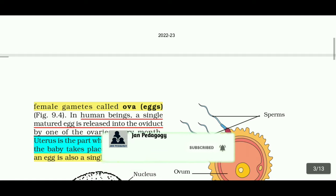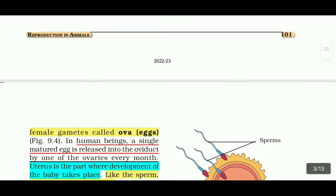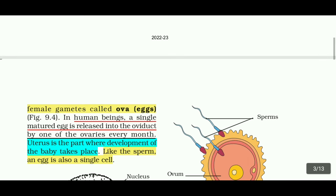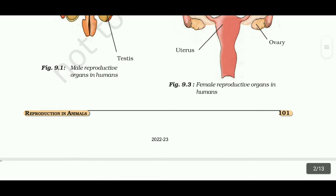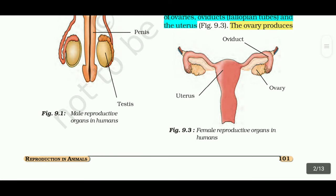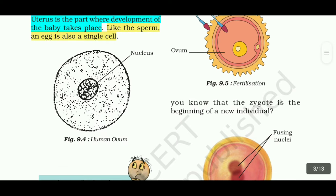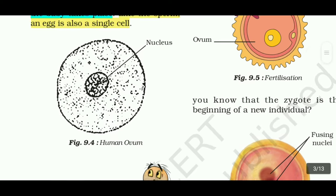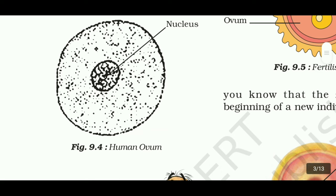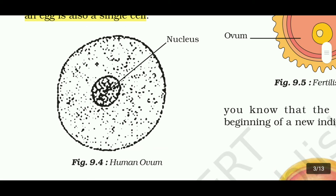The uterus is the part where the development of the baby takes place. Just like the sperm, the egg is also a single cell. As shown in figure 9.4, the human ovum has a nucleus.